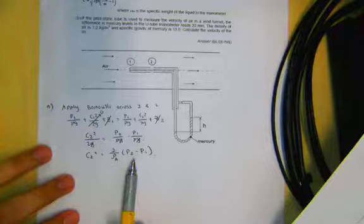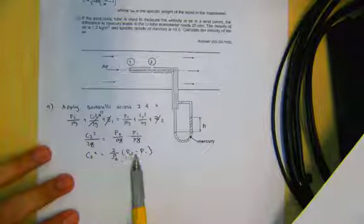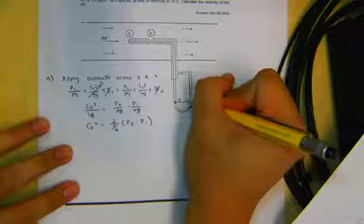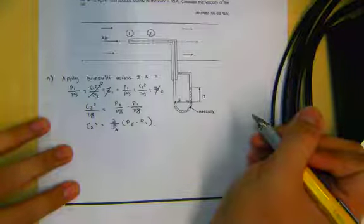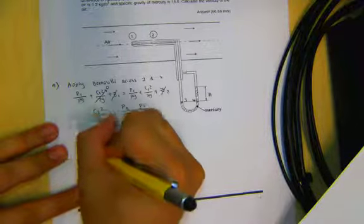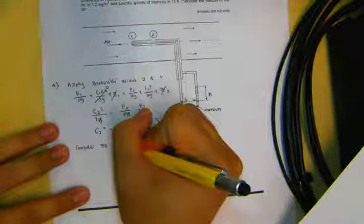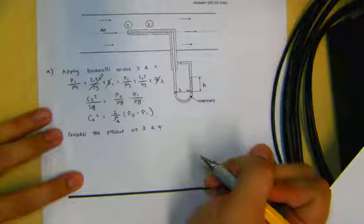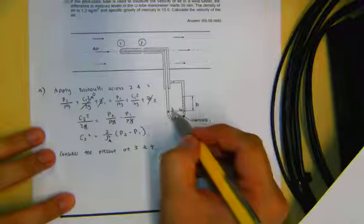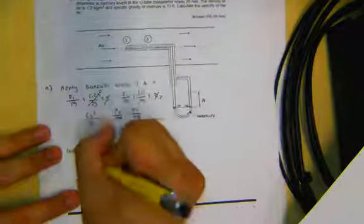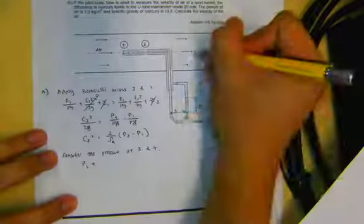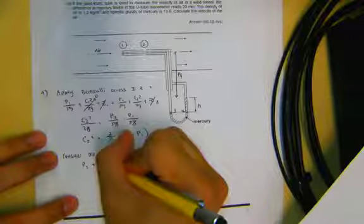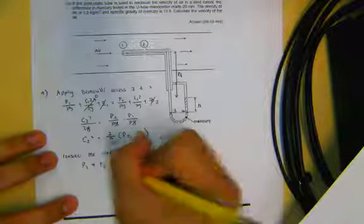Making C2 squared the subject and canceling G throughout: C2 squared equals (2 over rho) times (P2 minus P1), where rho is the density of air. However this still has a pressure term, whereas the target expression does not. So we must apply the manometer concept to substitute away the pressure difference term, labeling the manometer datum points 3 and 4.